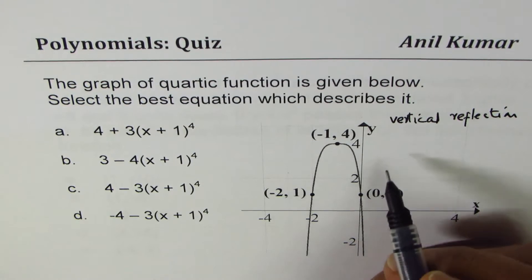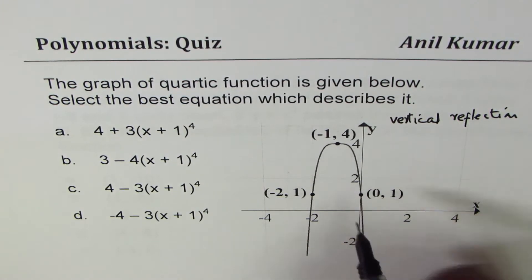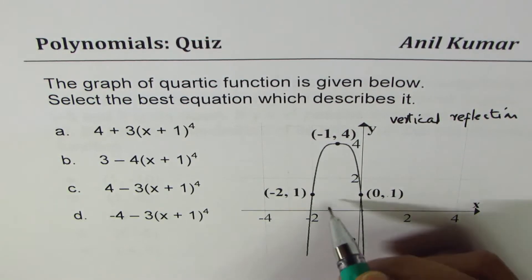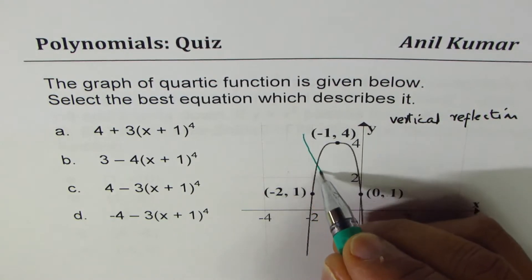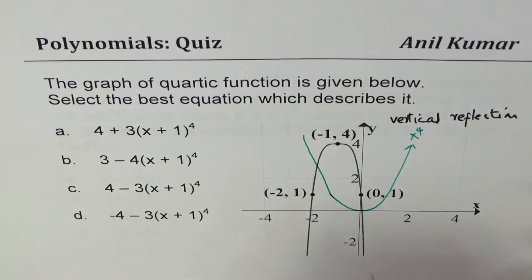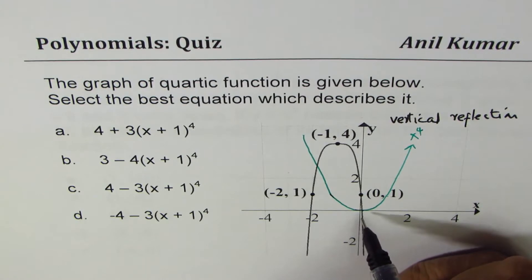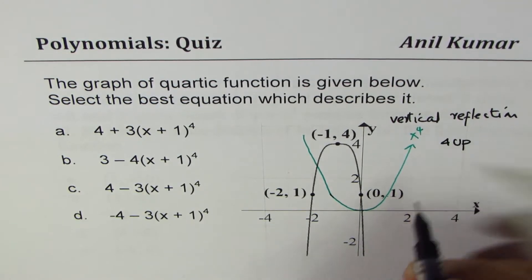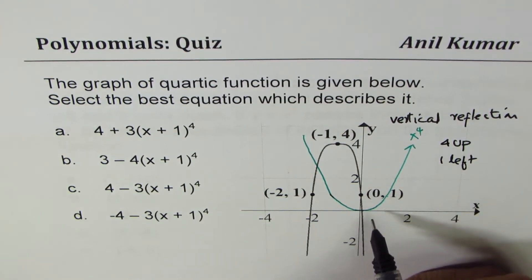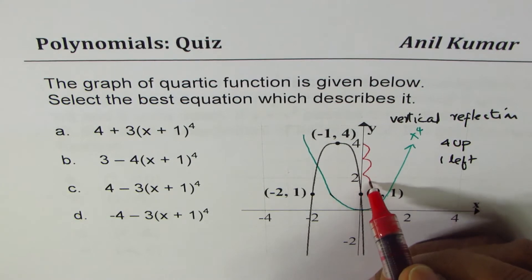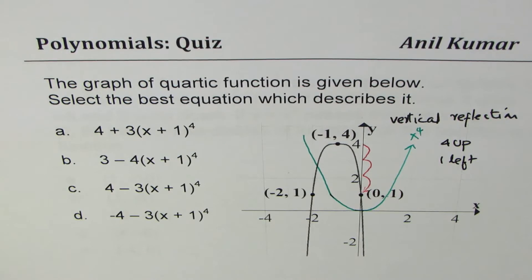Looking at the graph compared to x to the power of four, what you realize is that it has been reflected vertically, translated four units up and one unit left. The most difficult part is the stretch. You can find the stretch from the vertex — if I move one unit to the right, we come down three units. So that gives a value of three, meaning it is vertically stretched by a factor of three.